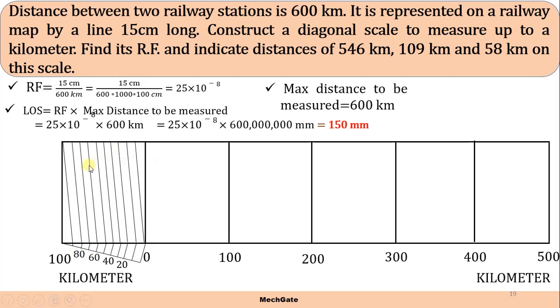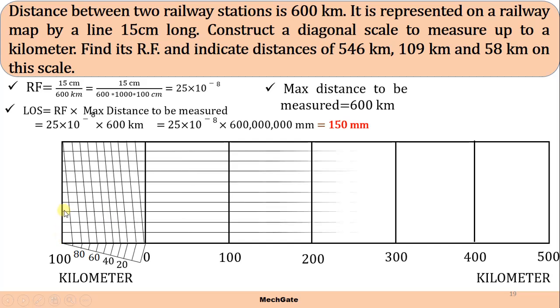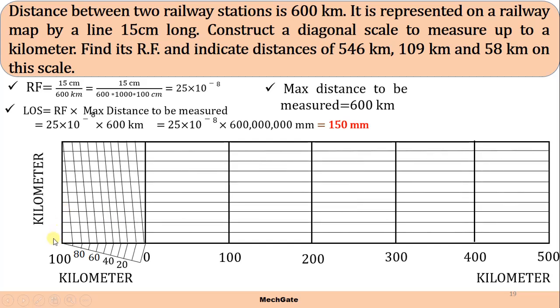Now draw the diagonal lines which connect 0 with 1 over here, 1 with 2 over here. That way you draw all the diagonal lines. Now let's divide this height into 10 equal parts. Give the numbering 1 to 10. This one division indicates 10 kilometers while moving diagonally upwards. This indicates the kilometers in terms of 1s: 1, 2, 3, 4, 5, 6, 7, 8, 9, and 10.